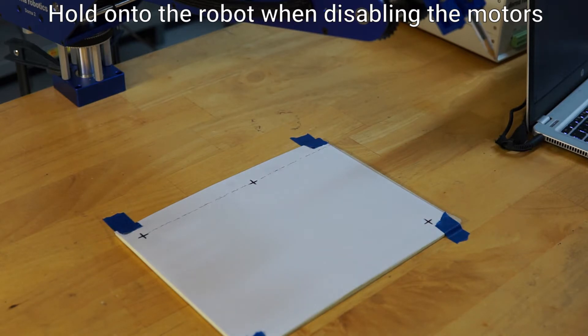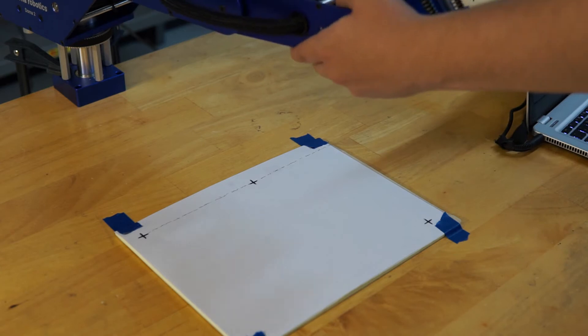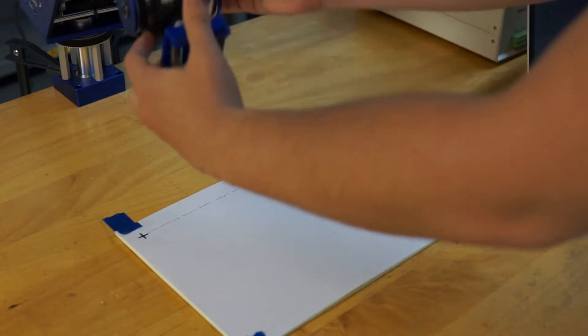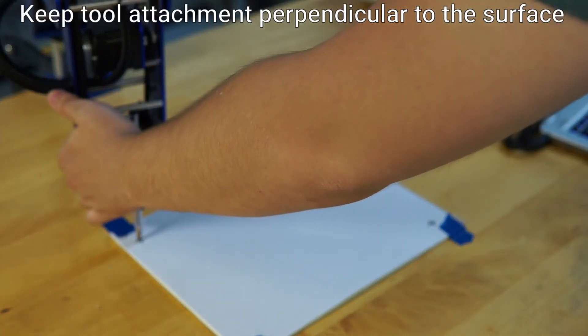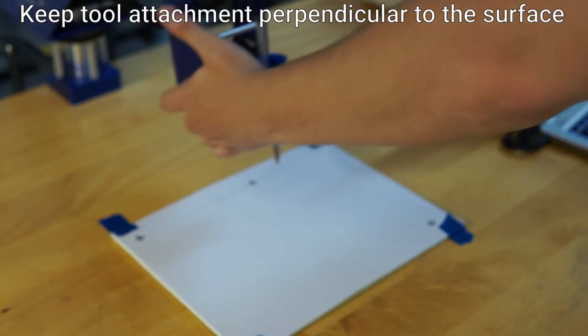When running the code it will ask to turn off the motors. Make sure to hold the robot so it doesn't fall down. Next the code will ask to set each corner individually. After that the code will ask to turn the motors on. After this the drawing should run until it's complete.